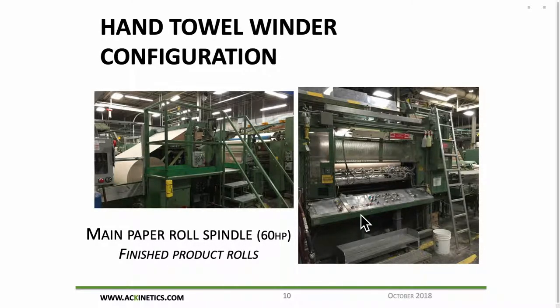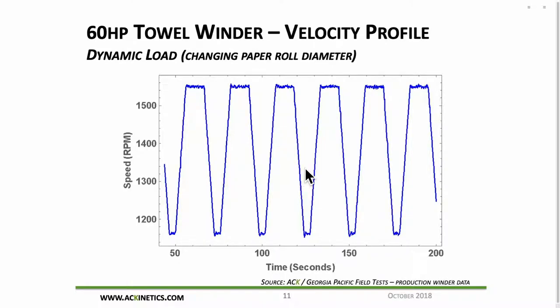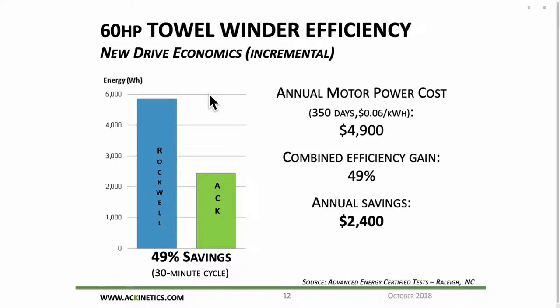This is a real physical test that we ran on a hand towel winder by our partnering company Koch Industries, which is Georgia Pacific. This paper roll that you see looks like a tiny roll, it's actually six feet in diameter, so it gives you an idea of the scale. There's a 60-horse motor that runs it. This is the load and speed change on that machine. In this particular machine, we saved half the energy. You can see there's some big advantages to doing this.